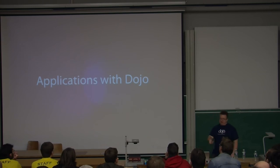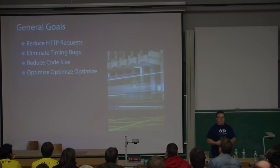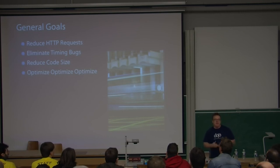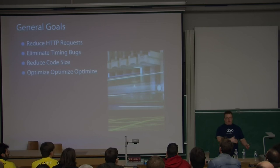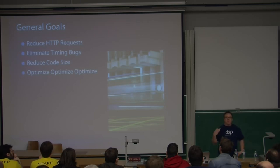Applications with Dojo — we have a lot of goals related to performance. HTTP request simplification, no timing bugs, small code size — optimize, optimize, optimize. People come to us saying, 'How do I make my app as fast in IE6 as in Safari?' We look at the code, find the bugs, and fix them. Sometimes the most benign things can cause a second delay in IE6, IE7, or even Firefox. You have to use the tools, look at the data, find the bugs, fix them.